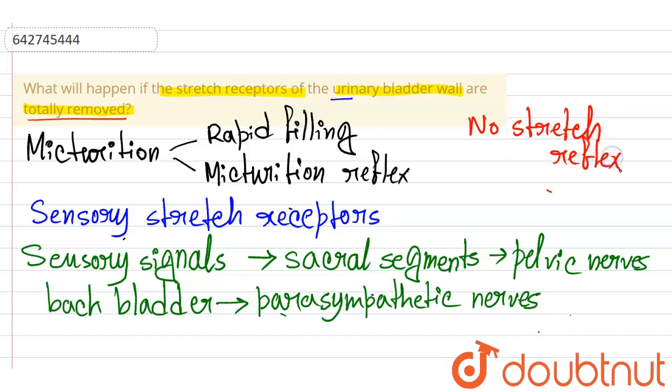So as there will not be any stretch reflex, the micturition contraction will not happen. So in this case, if the stretch receptors are completely removed, the urine will continue to fill in the bladder normally, but there will be no micturition.